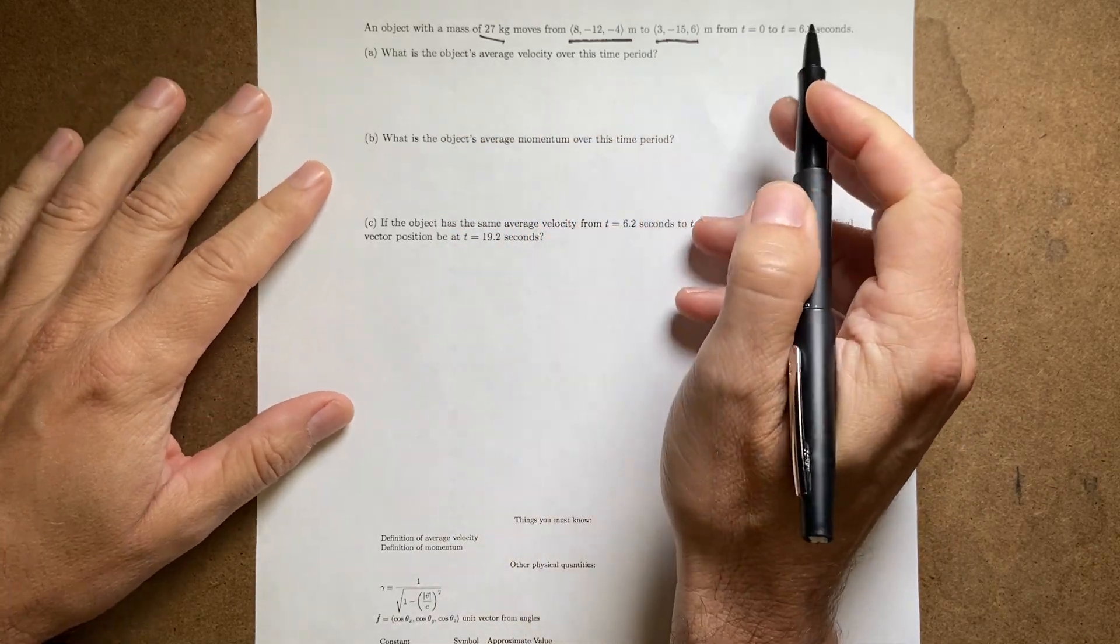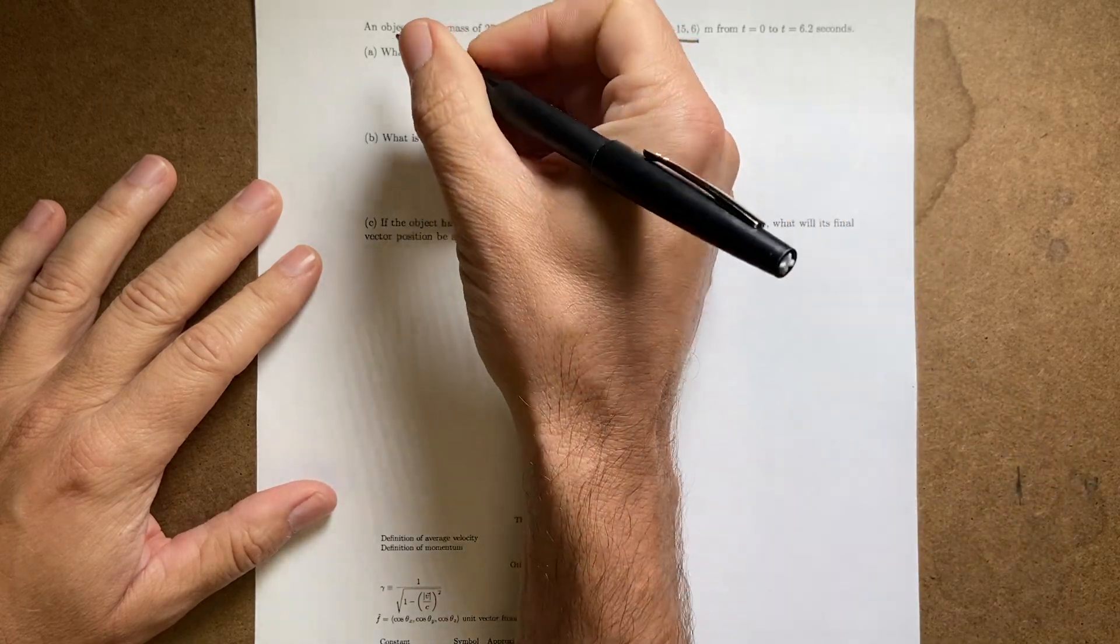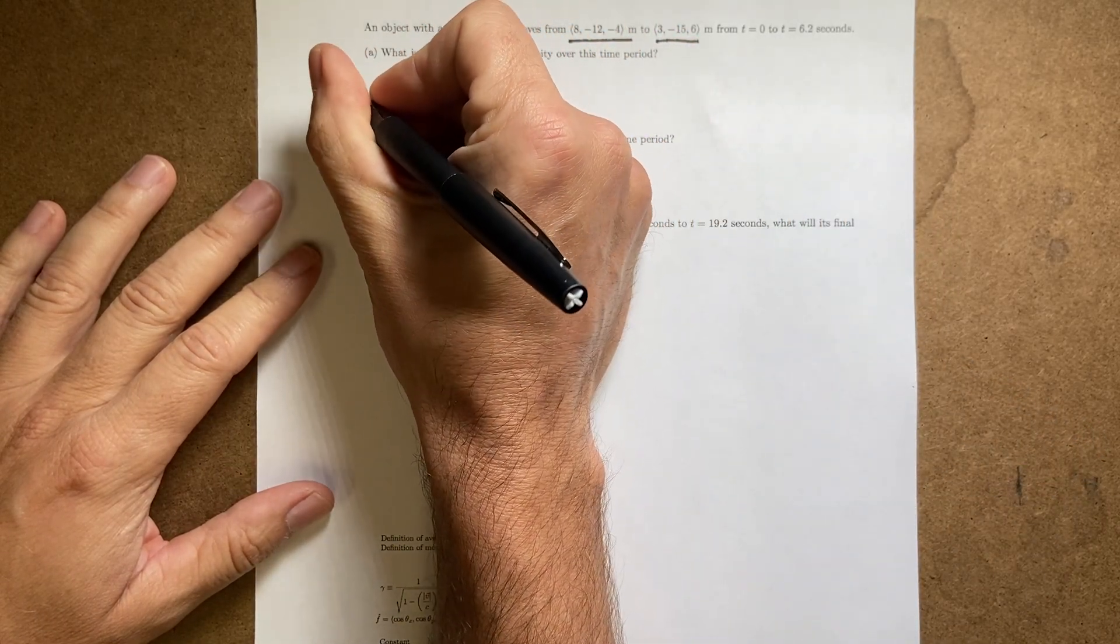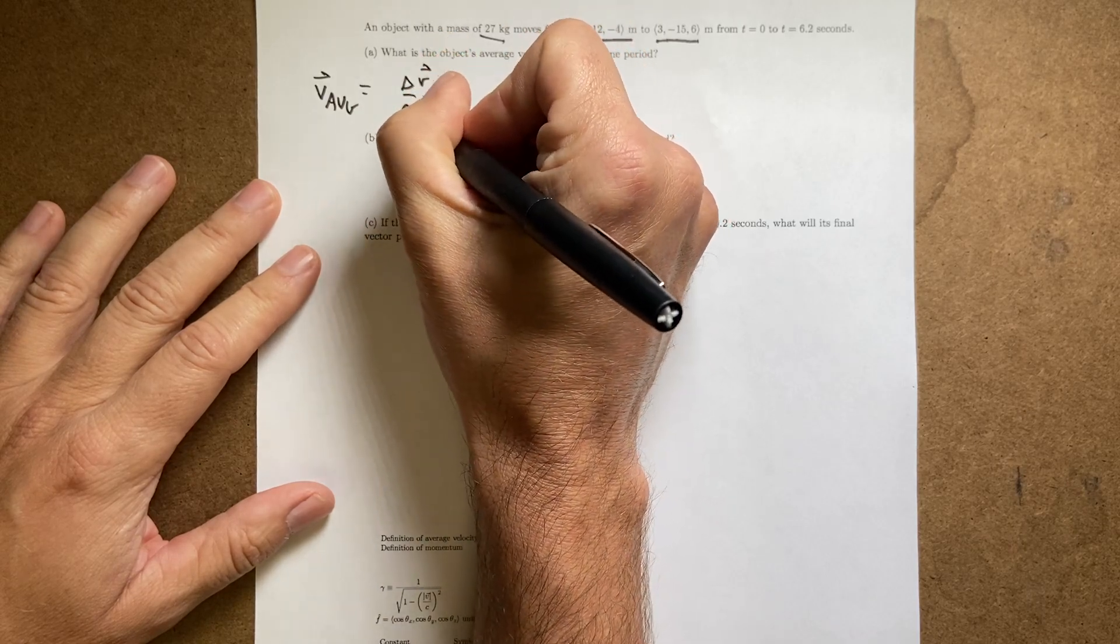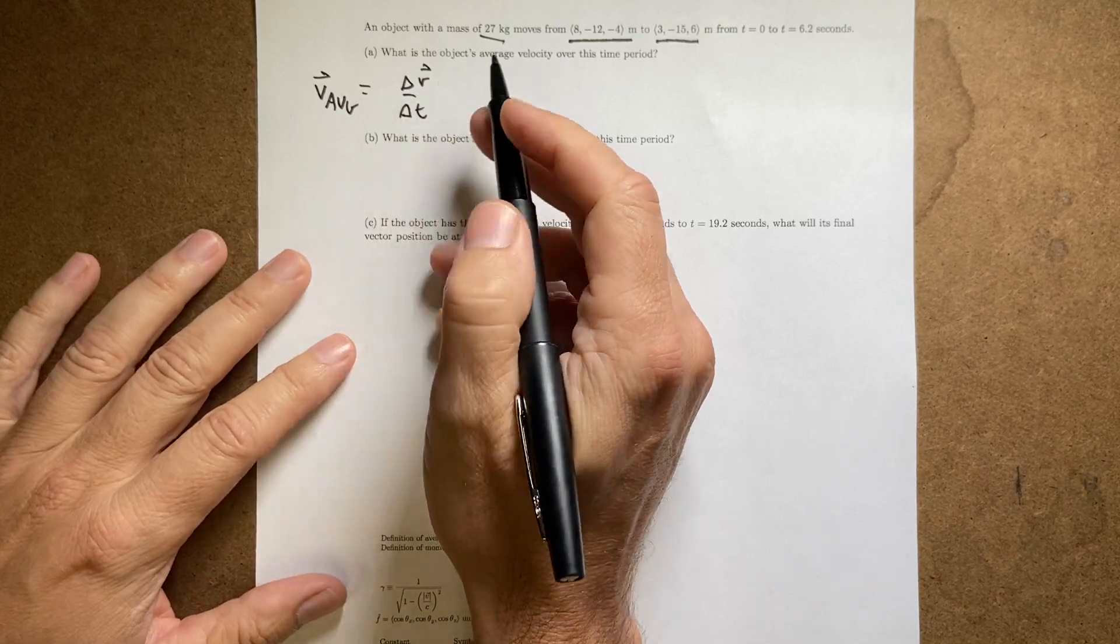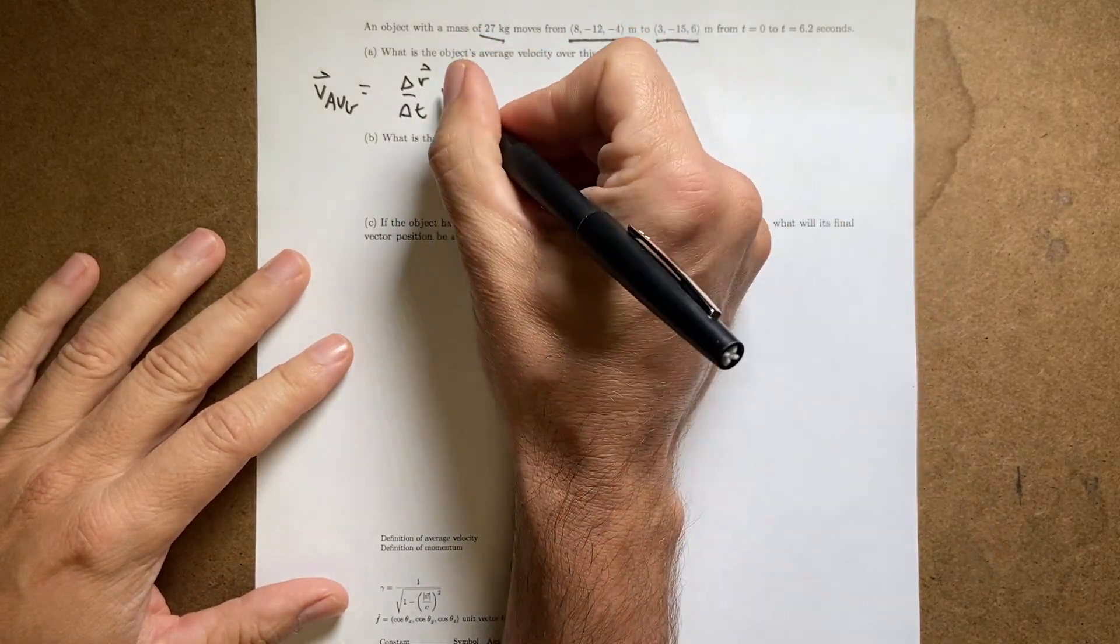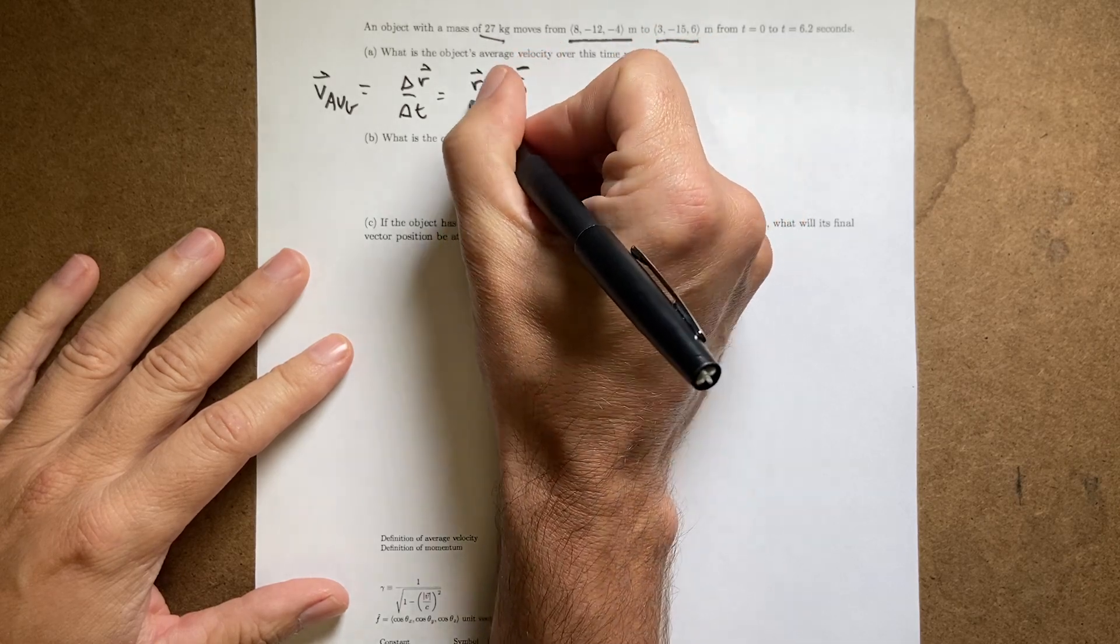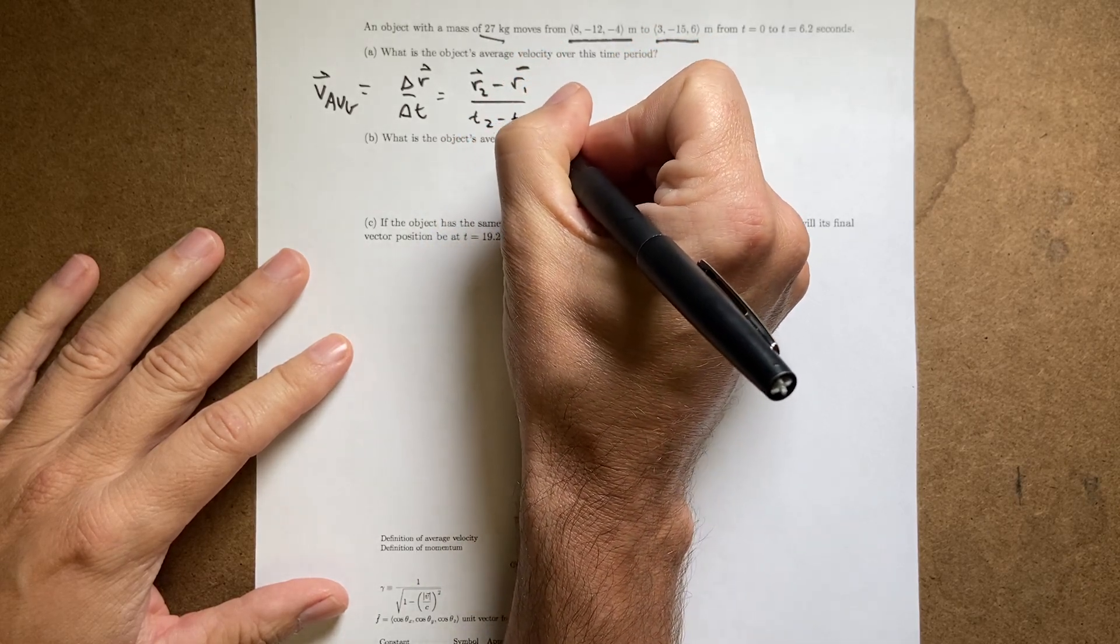What's the average velocity over this time period? So we're going to start off with the definition of average velocity. V average is the change in position over the change in time. Change is super important here. So I can write this as r2 minus r1 over t2 minus t1.